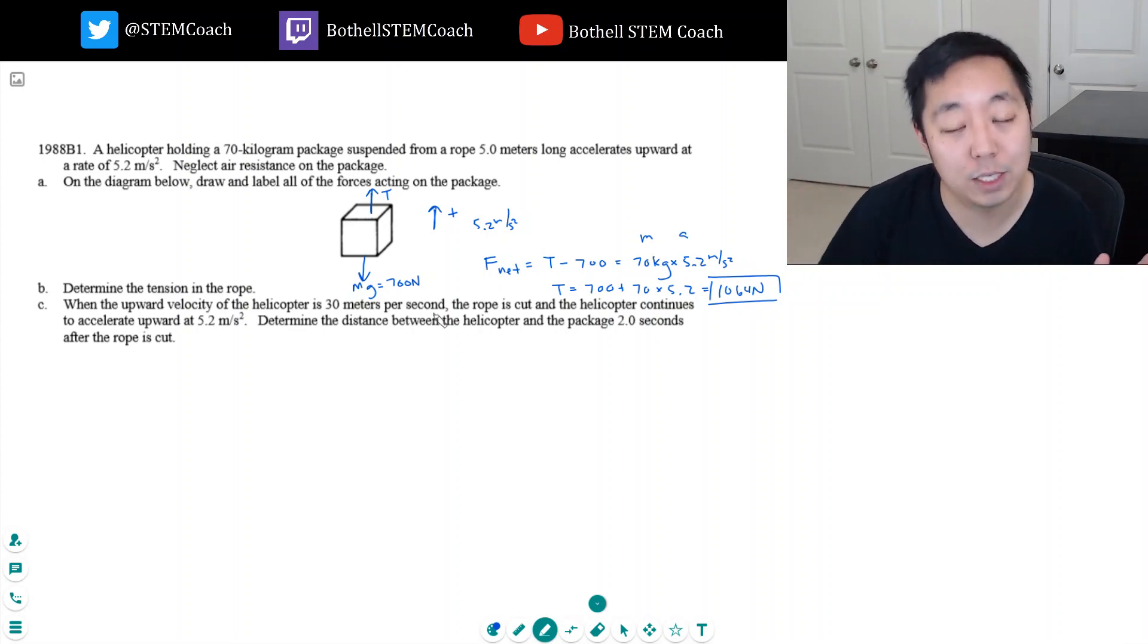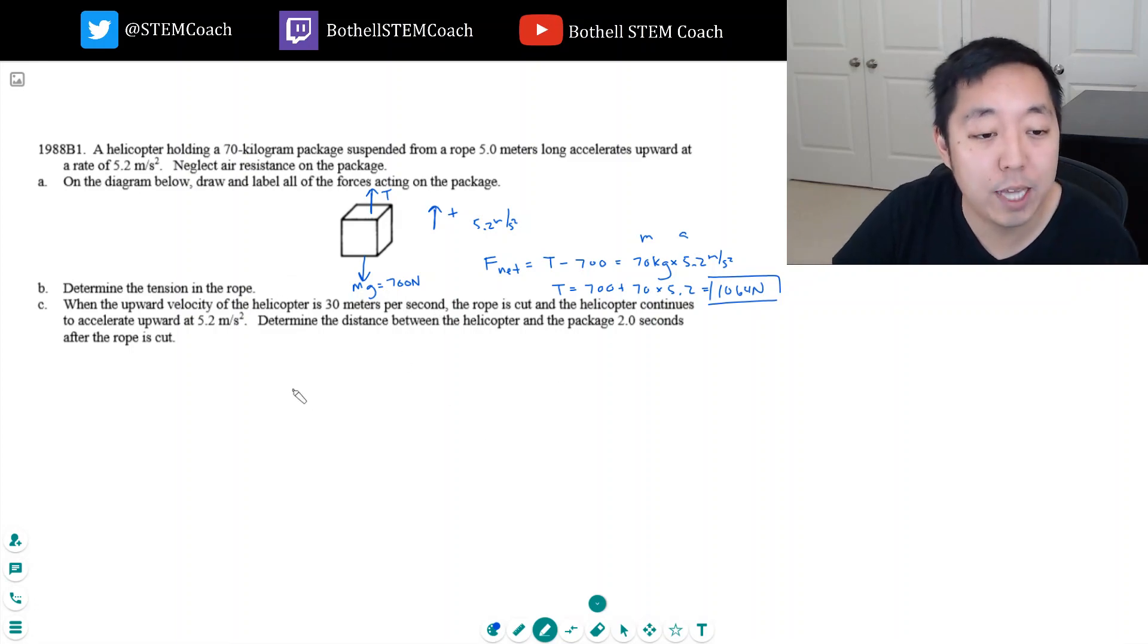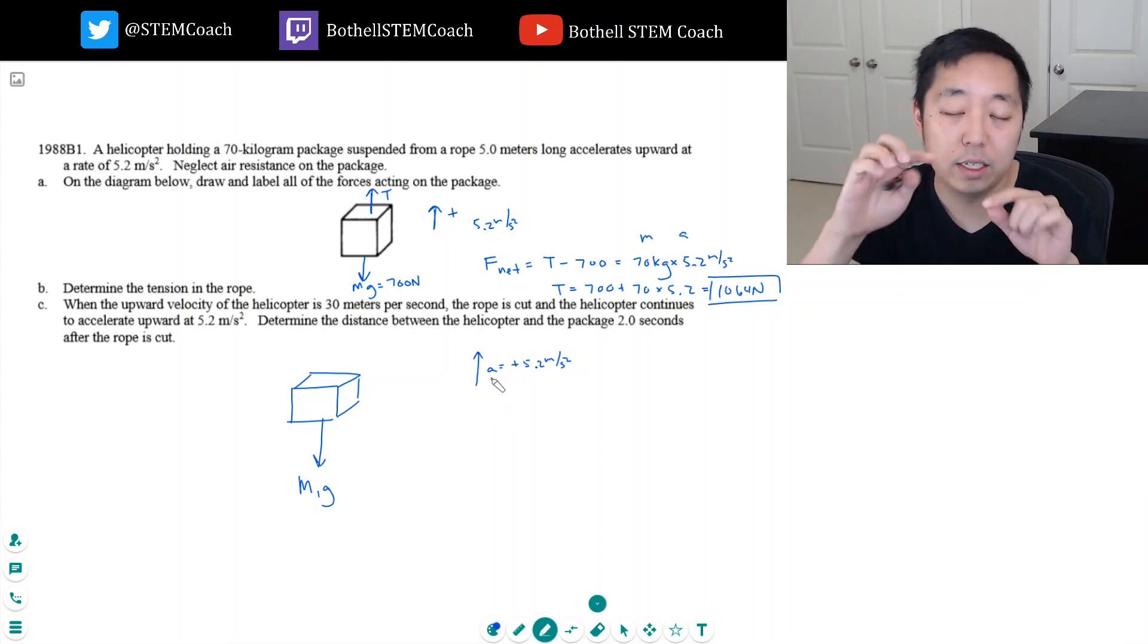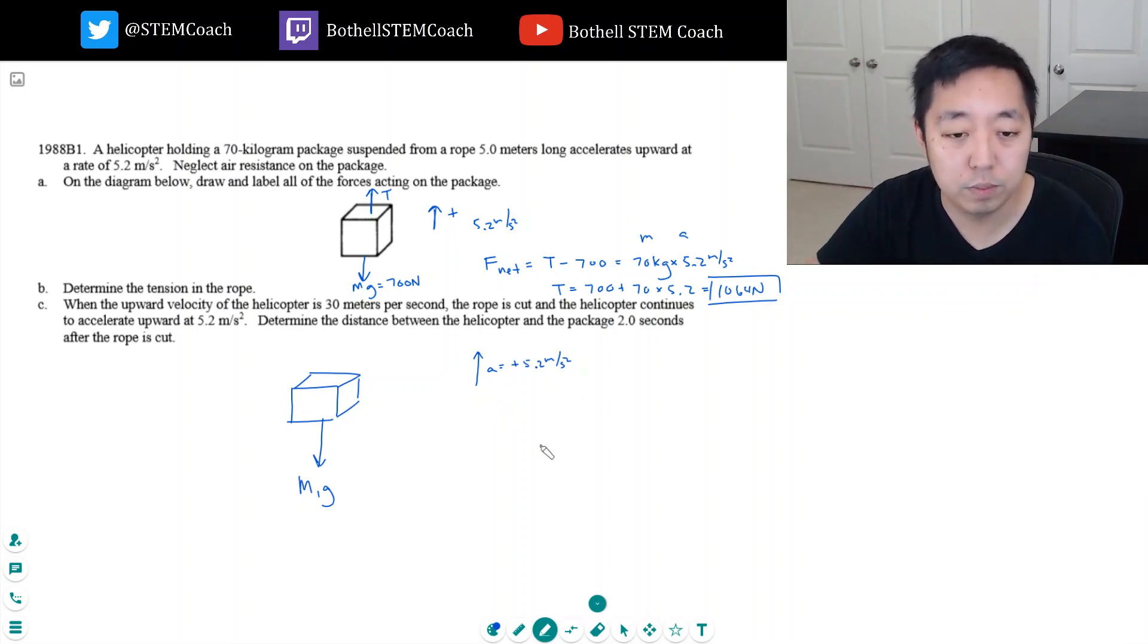So now we've switched into a kinematics problem because now this box is free falling since there's no more rope on it. He just has gravity acting on him, and the helicopter continues to accelerate at 5.2 meters per second squared. There's a couple of ways you can think of this. Let's call the position zero the moment they cut it. So at the moment they cut it, we're at position zero meters.